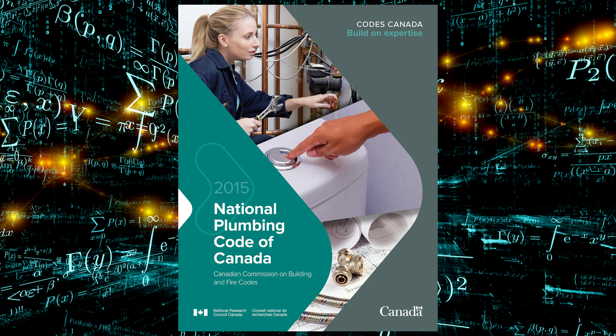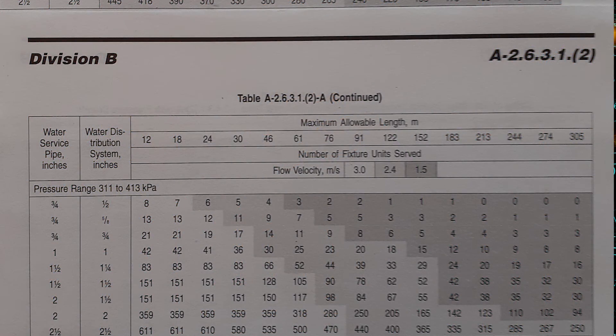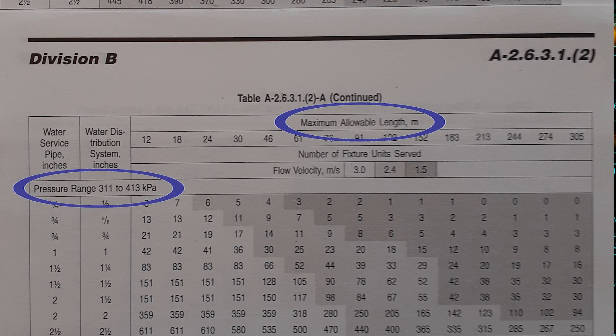Once again we are using the National Plumbing Code of Canada to do the waterline sizing here. You're going to notice that when it comes to waterline sizing everything is in metric including the pressures. The length of water pipe will be in meters and the pressures will be in kPa.